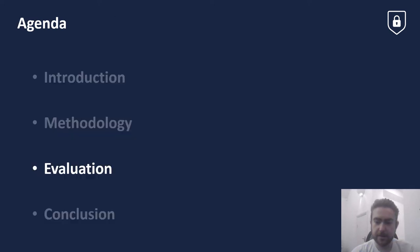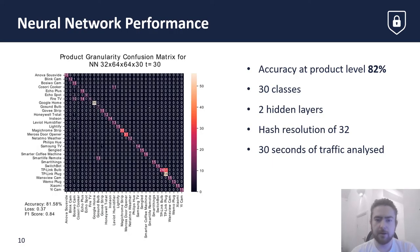We will now discuss the evaluation. The neural network was able to predict devices at the product level with an accuracy of 82%. This particular neural network comprised of two hidden layers, and the dataset contained 30 seconds of DNS traffic, hashed with a hash resolution of 32.